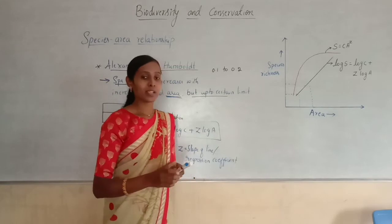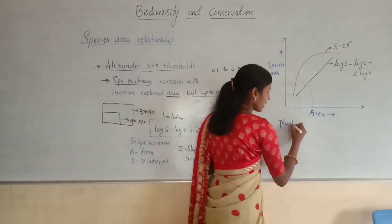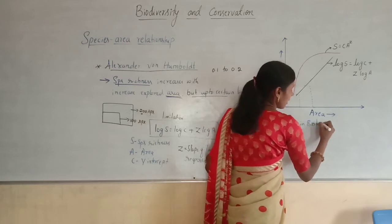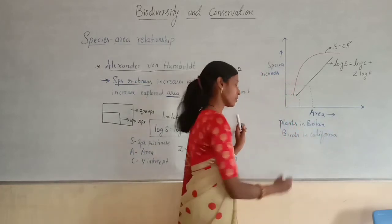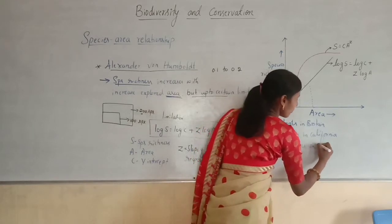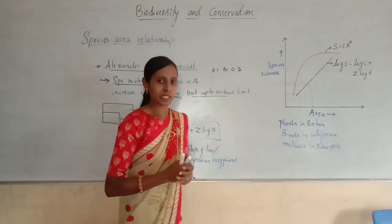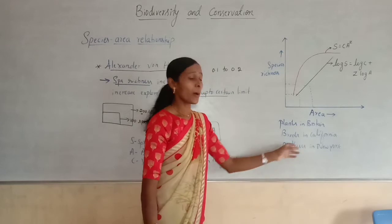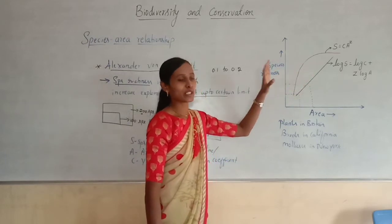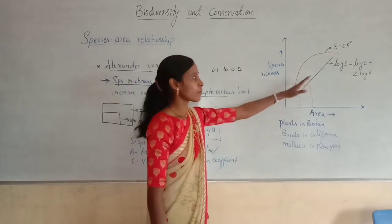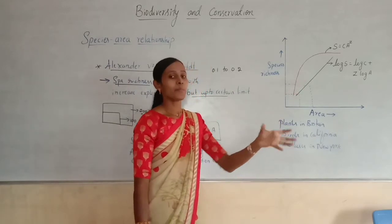Irrespective of various taxonomic groups — for example, plants in Britain, birds in California, and mollusks in New York — whatever organisms we consider, the regression line or slope of the line is amazingly similar. The same type of slope of line can be expected irrespective of the taxonomic group.